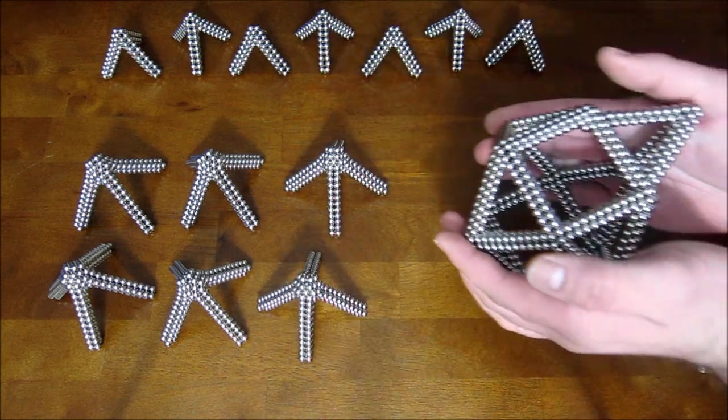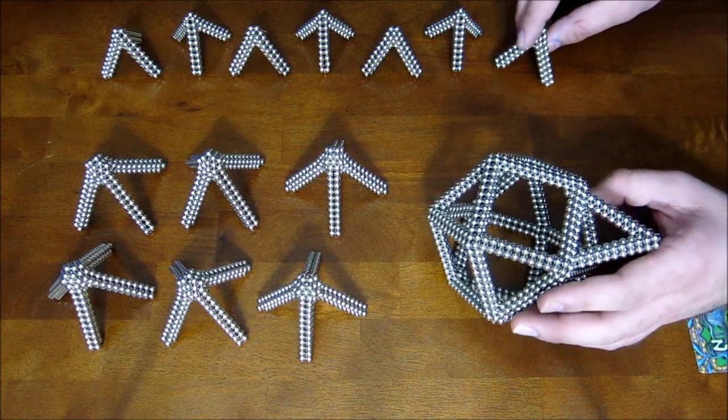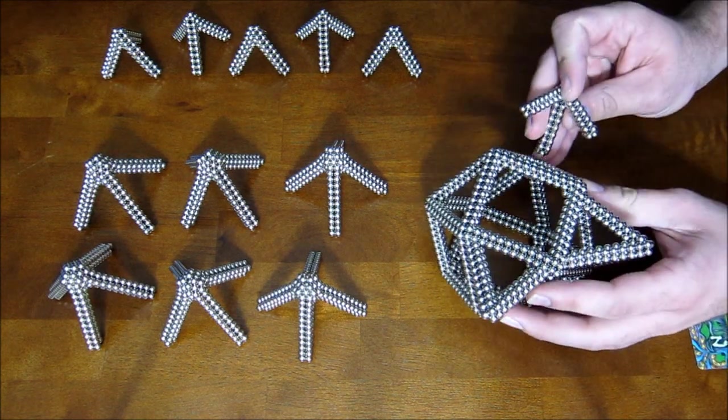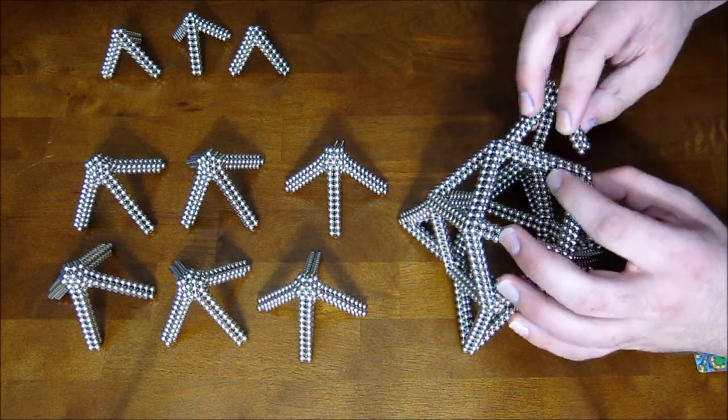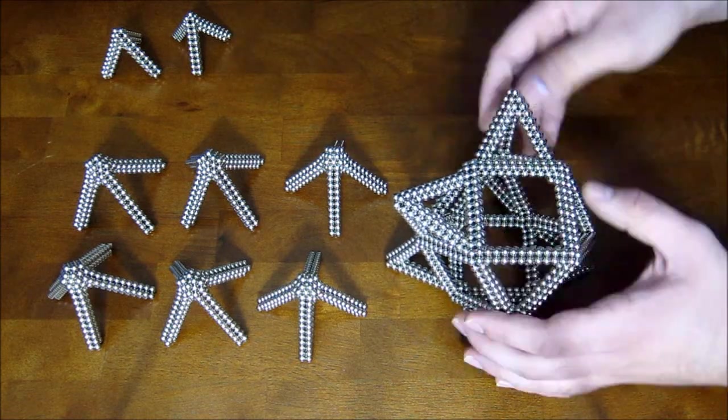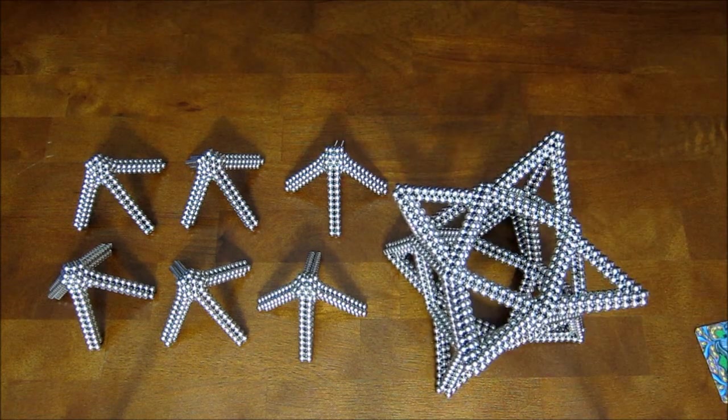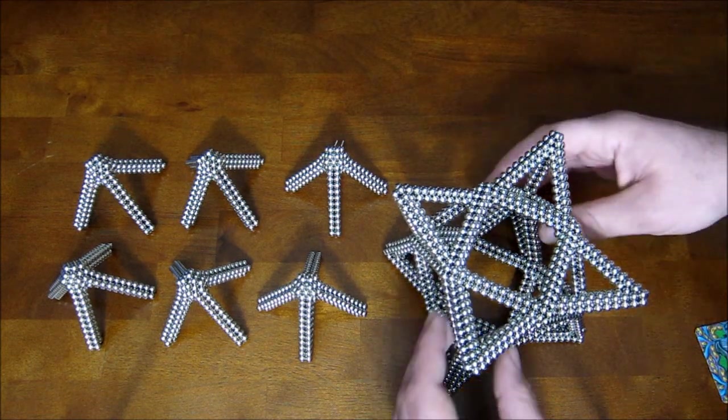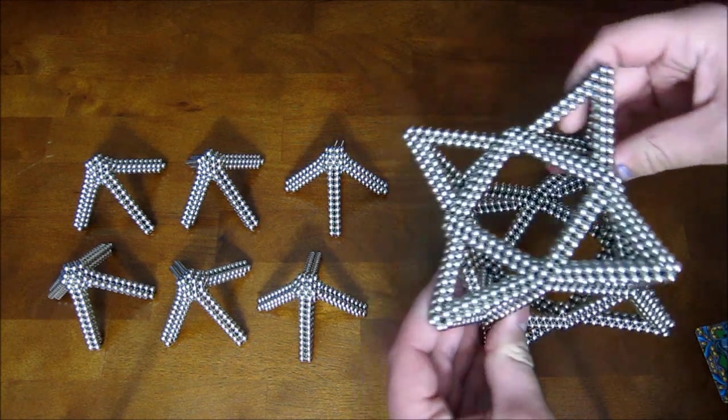Just like that. And for the type A, you just want to go around and attach all eight of these to all eight triangular faces. And that is how you build the stellated cube octahedron type A.